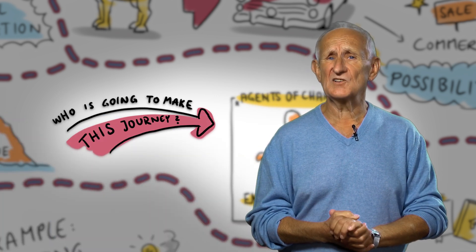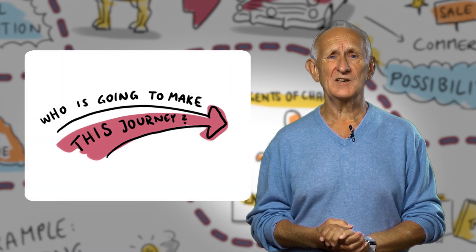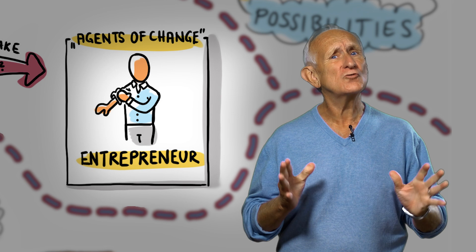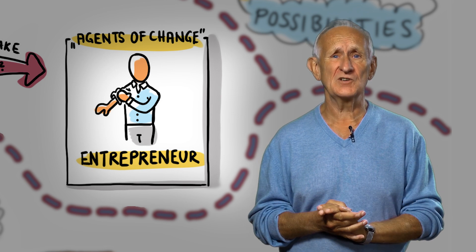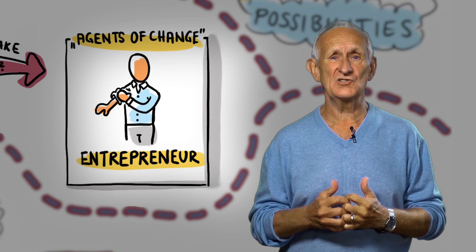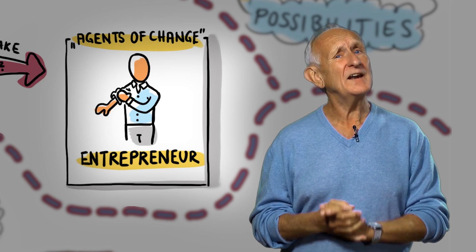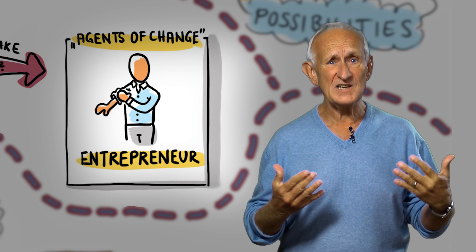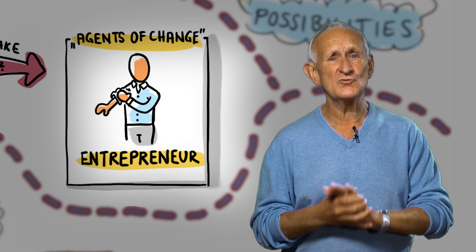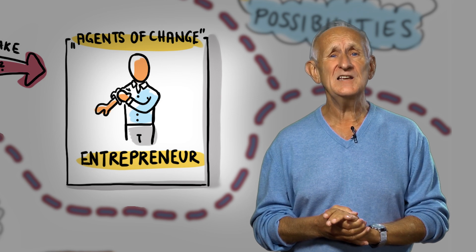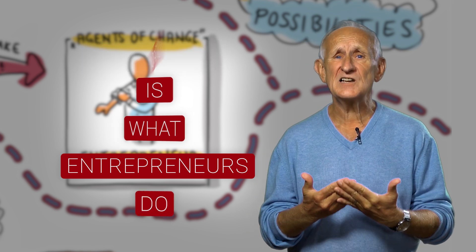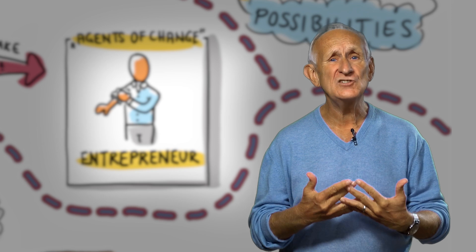So one of the questions we might ask ourselves is: who is going to make this journey? The answer is simple — it's the entrepreneur. It's a French word originally, but what it really means is somebody who undertakes something, specifically the one who undertakes the journey, who makes innovation happen. Innovation doesn't just happen — it's driven by people. As the great management writer Peter Drucker put it clearly: innovation is what entrepreneurs do. Innovation is essentially something driven by entrepreneurs as agents of change.